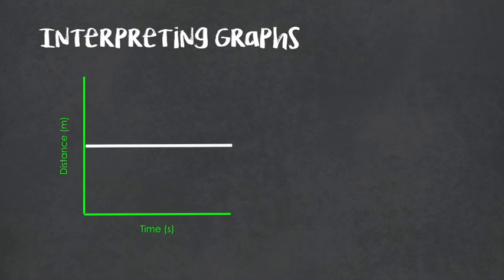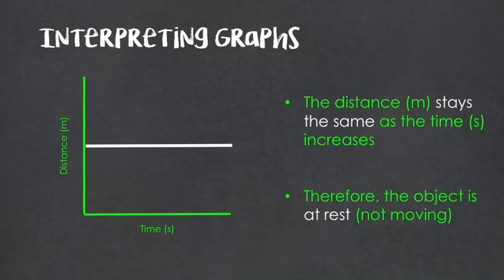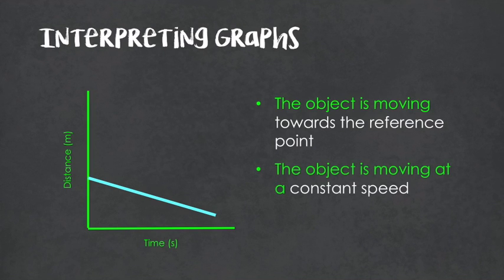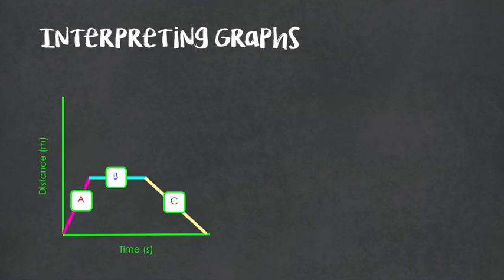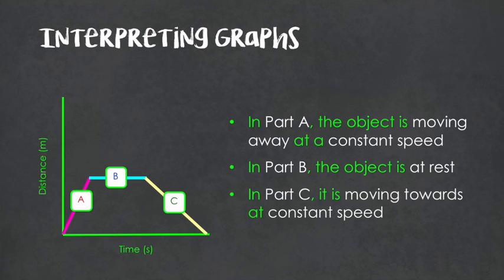Let's take some time to read some different graphs. In our first example, we have a flat horizontal line, so distance is staying the same as time increases — the object is at rest. In the second, distance is decreasing, which means the object is moving towards our reference point at a constant speed. The slope of the line is narrow, meaning the object is moving slowly — a steeper slope equals faster movement. In the last multi-part graph: part A, the object moves away from the reference point at a constant speed; part B, the object stops and is at rest; part C, the object moves back towards the reference point at a slower constant speed.